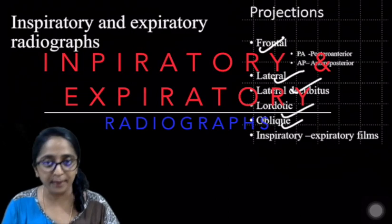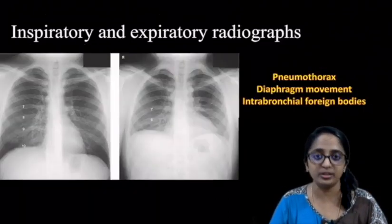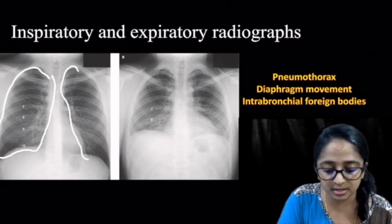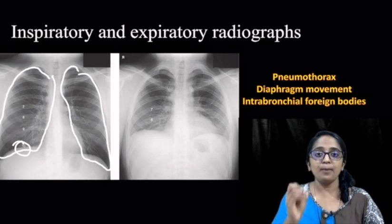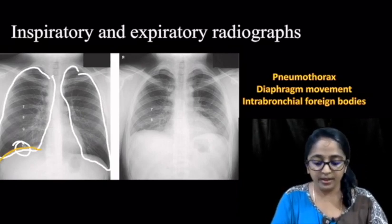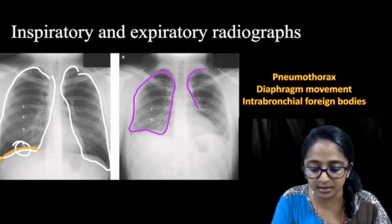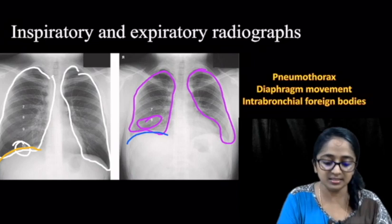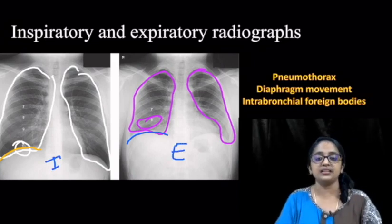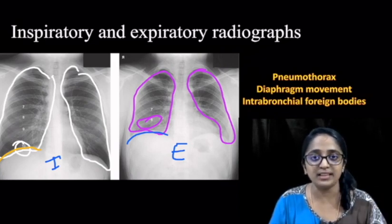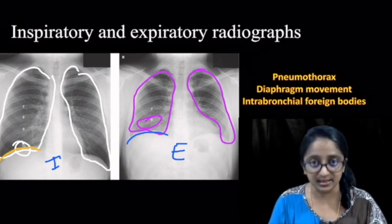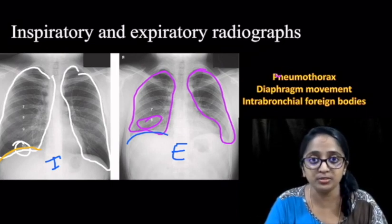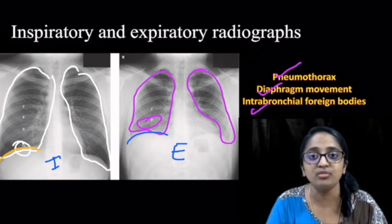Coming to the final topic: the paired inspiratory-expiratory radiographs. On the left you can see lung fields with relatively preserved volume — the tenth posterior rib cuts across the dome of the diaphragm. On the right, the lung volumes appear relatively smaller, with only the eighth rib cutting across the dome of the diaphragm. So this is the film taken in inspiration and this is the film taken in expiration. The standard rule is to go for chest frontal projection in adequate good inspiration, but we prefer additional expiratory views in three cases: in cases of pneumothorax, to assess diaphragmatic movement, and to detect intrabronchial foreign bodies.